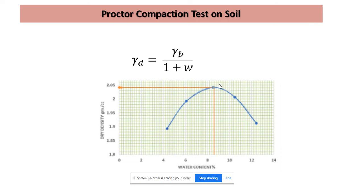This curve is known as the optimum moisture content curve. The peak of this curve represents, on the x-axis, the optimum moisture content, and when we move toward the y-axis it gives the maximum dry density. In this way, we can determine both optimum moisture content and maximum dry density of soil using the Proctor compaction test in the laboratory.